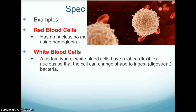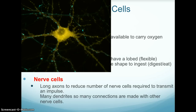White blood cells: a certain type of white blood cell has a lobed or flexible nucleus so that the cell can change shape to ingest bacteria. Nerve cells have long axons to reduce the number of nerve cells required to transmit an impulse, and there are many dendrites so many connections are made with other nerve cells.